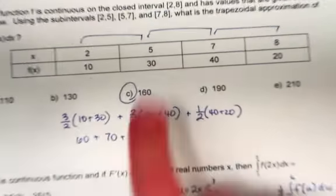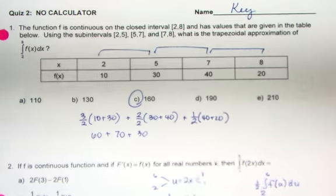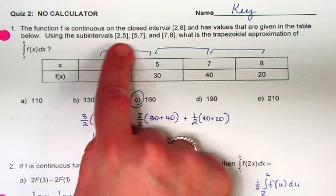F is continuous from 2 to 8. Super good. It says it's got these values. You're using 2 to 5, 5 to 7, 7 to 8.